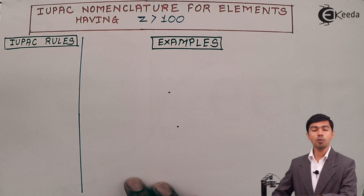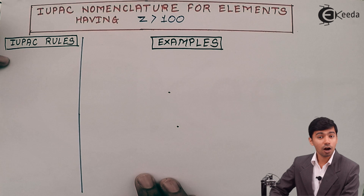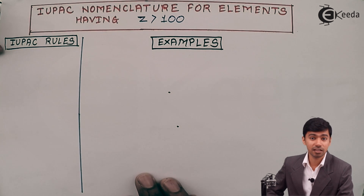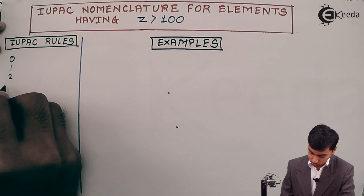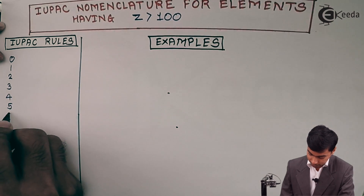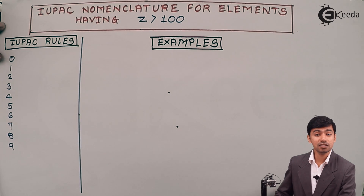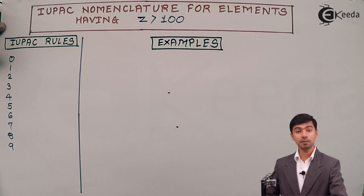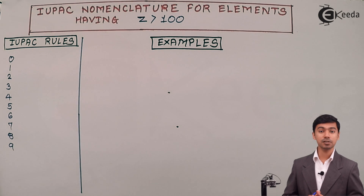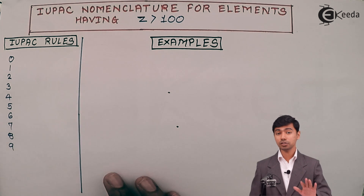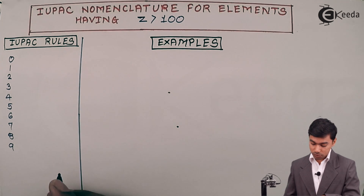Before starting the examples, let us see the IUPAC rules for such nomenclature. How many numbers are there in the world? Only 10 numbers: 0, 1, 2, 3, 4, 5, 6, 7, 8, and 9. The rest of the numbers are combinations of these 10. So IUPAC has given different names to each of these 10 numbers.